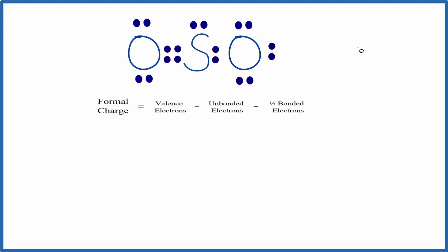When we have elements that are in period three or below like sulfur, we should check the formal charges. That's because they can have expanded octets. They can have more than eight valence electrons. When we check the formal charges, that'll tell us a lot about this structure. So let's do that.